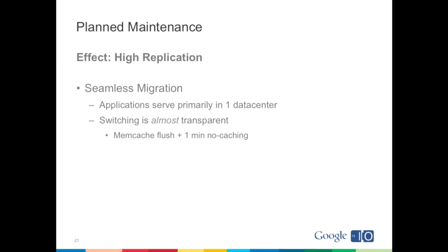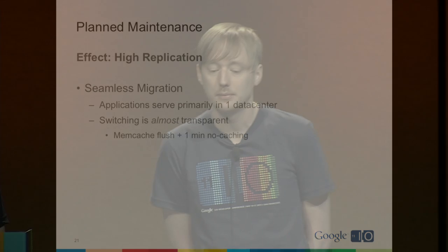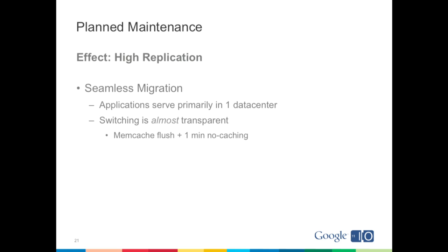For High Replication applications during maintenance periods, they are pretty much not affected at all. While we primarily serve HR applications out of a single data center, we're able to seamlessly migrate these applications from one data center to another with almost no notice to the developer or user. Furthermore, we're able to do this without any interaction from the App Engine team at all. Google data centers have a system for notifying services that maintenance periods are beginning, so they should move traffic. When App Engine receives that signal, we automatically move the application to another data center not scheduled for maintenance.